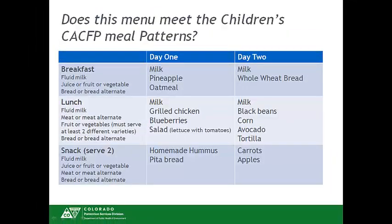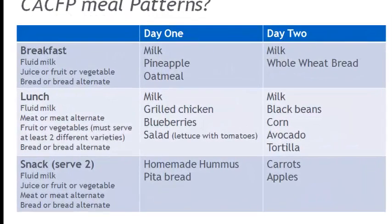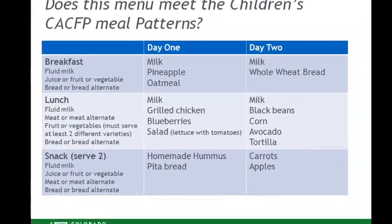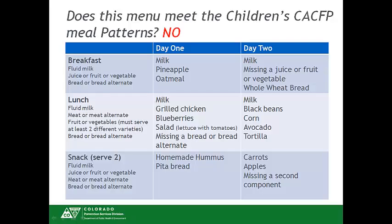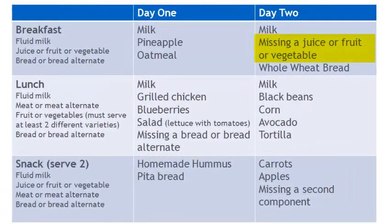Now that we have covered the different meal patterns for infants, children, and adults, we will review a child's menu to determine if it is meeting the meal patterns. Take a minute to review the two-day menu to determine if this meal pattern follows all the requirements. The left side of the menu lists the required components for breakfast, lunch, and snack. Did the two-day menu meet the meal pattern? The correct answer is no. For breakfast on day two, the menu needed to list a juice or fruit or vegetable in order to meet the meal pattern.